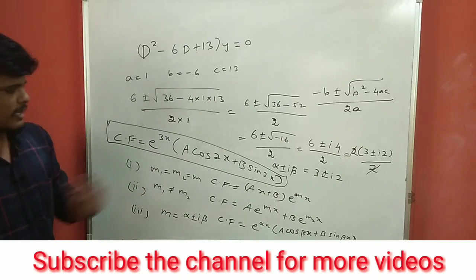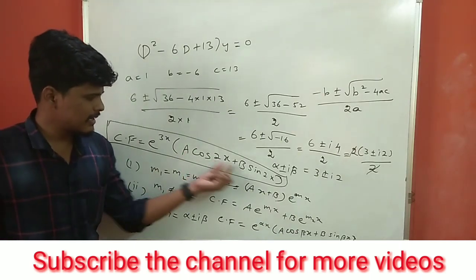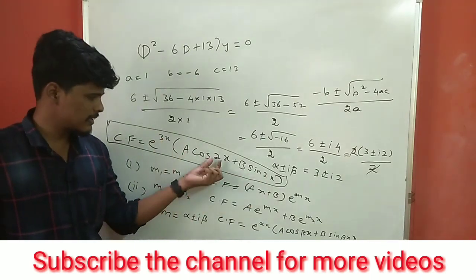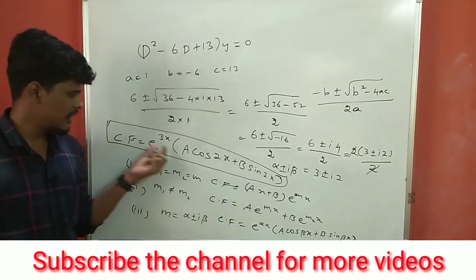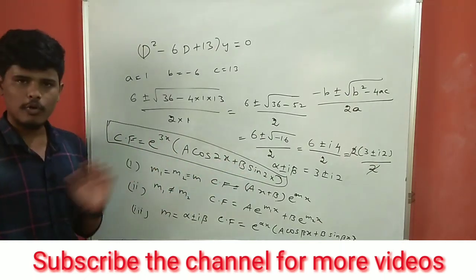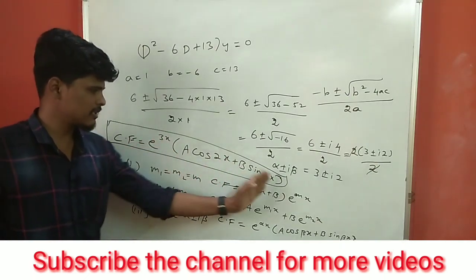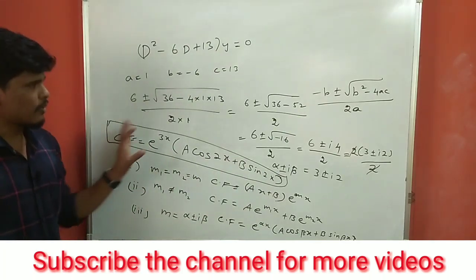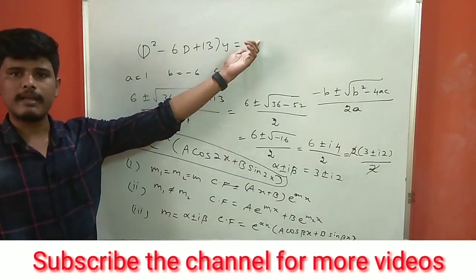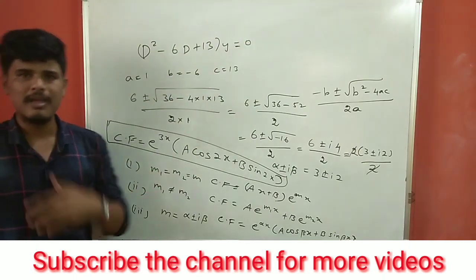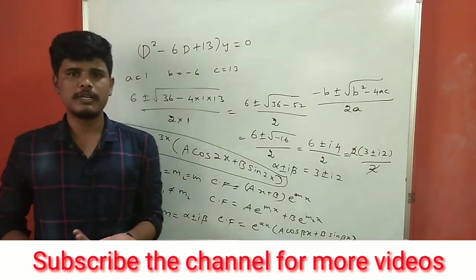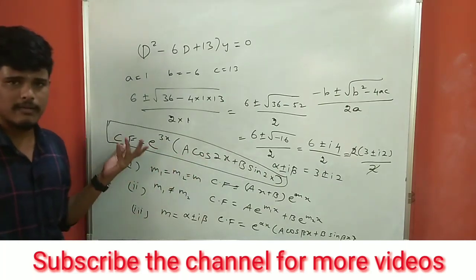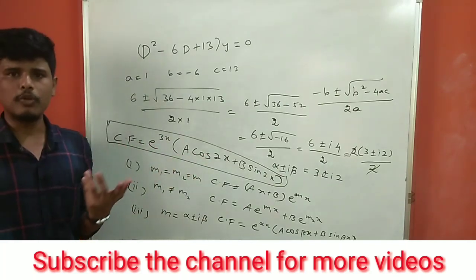That is the solution for this example. Since the right-hand side is zero (homogeneous equation), the complementary function alone is the final solution — there is no particular integral to add. So the final answer is CF = e^(3x)(a·cos(2x) + b·sin(2x)).